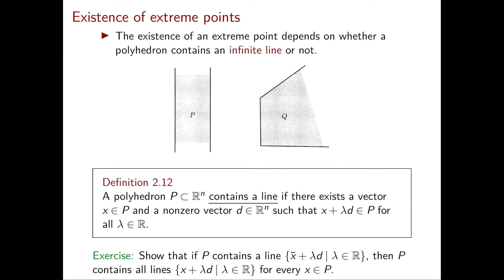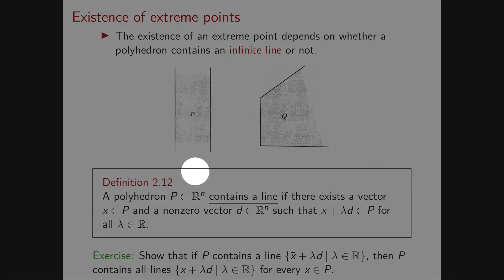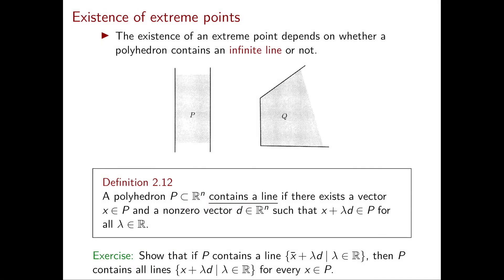First let's see the idea with a couple of examples. On the left we have a polyhedron P which does contain a line. In fact, you can pick any line that is parallel to the two lines that define P and which lies between them. In this way you can obtain a line — and actually many of them — which are fully contained in P. We're interested in whether it contains at least one, and P therefore contains at least one line.